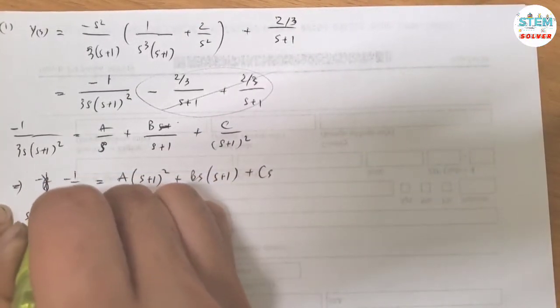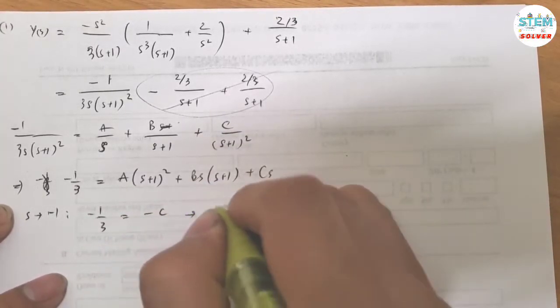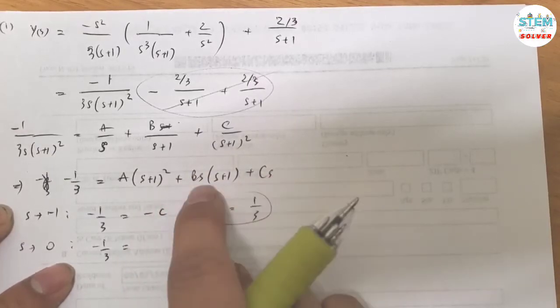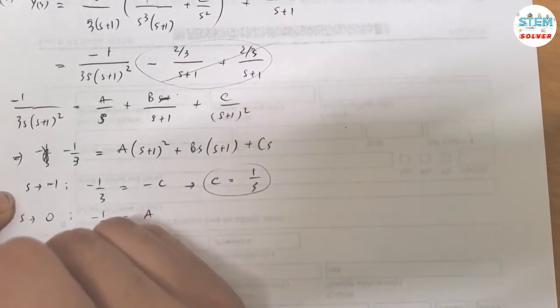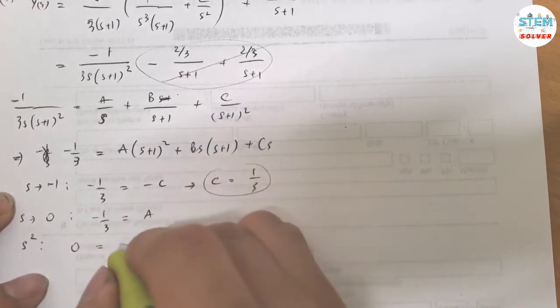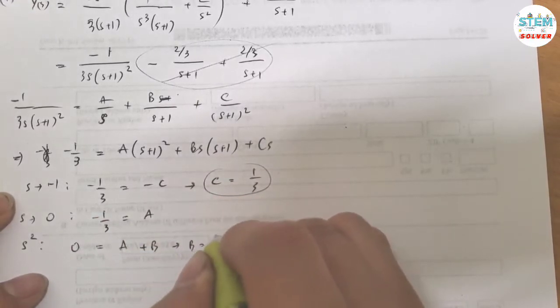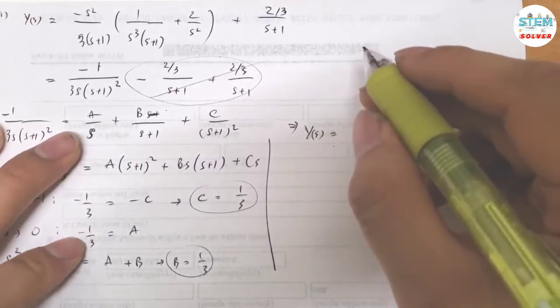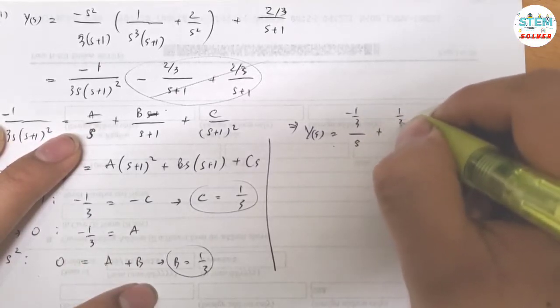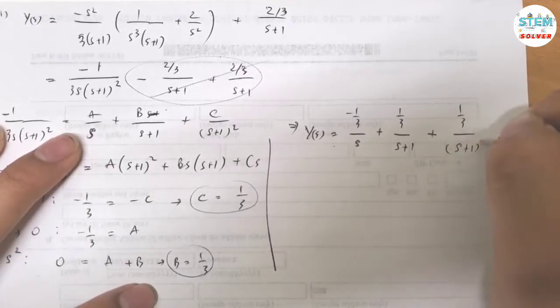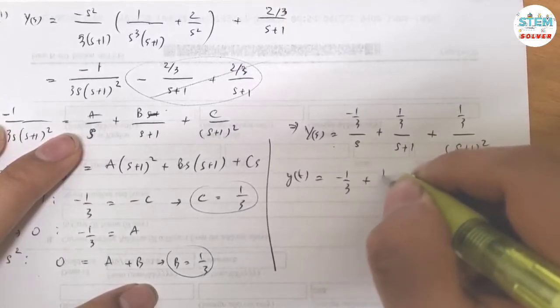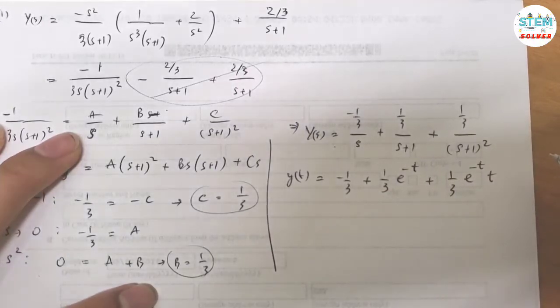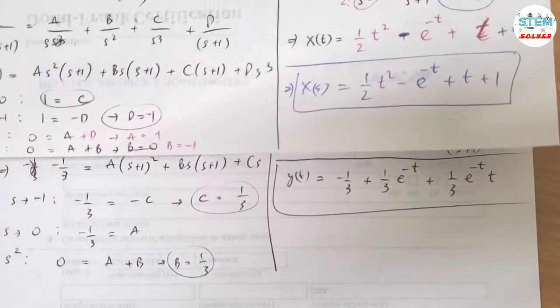Let's suppose negative 1. I have negative 1 third equals negative C. Then C equals 1 third. Let's suppose 0. Negative 1 third equals A. Now take a look at the leading coefficient of S squared, 0 equals A plus B. A is negative 1 third so B has to be positive 1 third. So capital Y of S equals negative 1 third over S plus 1 third over S plus 1, 1 third over S plus 1 squared. I have inverse Laplace on both sides. I have negative 1 third plus 1 third e to the negative T plus 1 third e to the negative T times T. So this is your Y of T and this is your X of T.